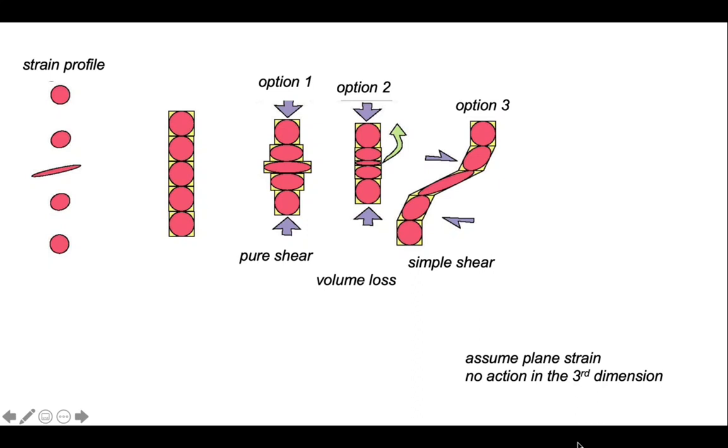And option three is by simple shear. All of these models assume plane strain, that is, there's nothing happening in the third dimension. So we can consider the problem simply in terms of the two dimensions of the screen.